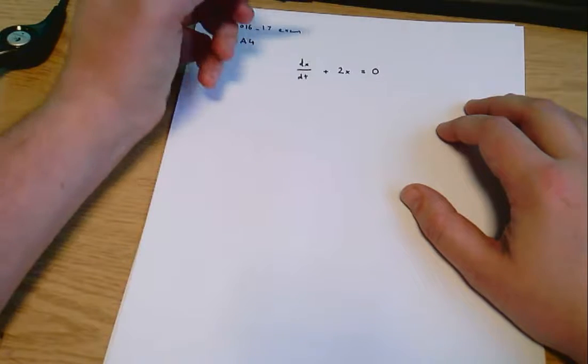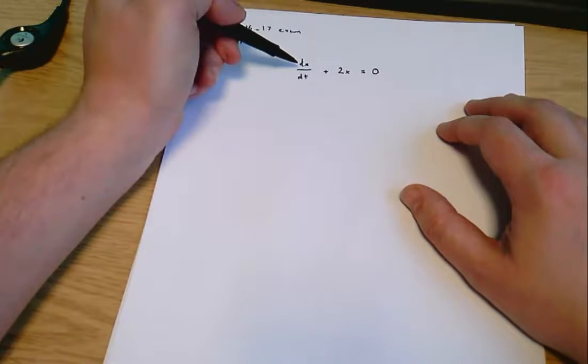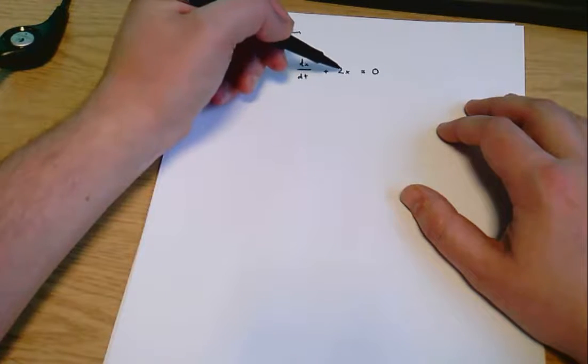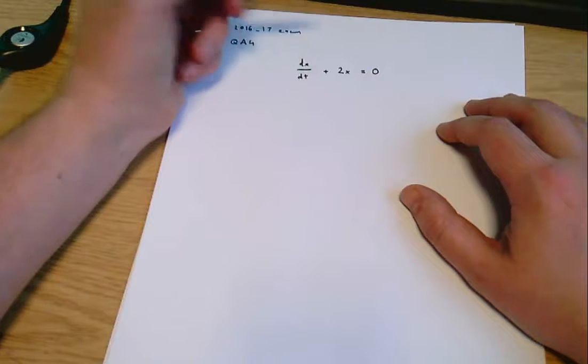So what we're looking for here is a function where when we take that function and differentiate it and then add it to two times itself, the whole lot cancels out and we get zero.